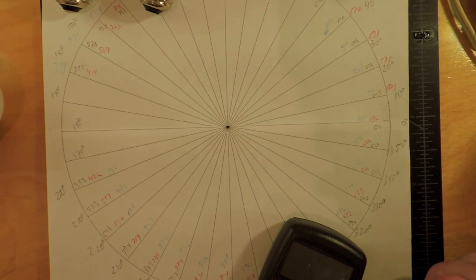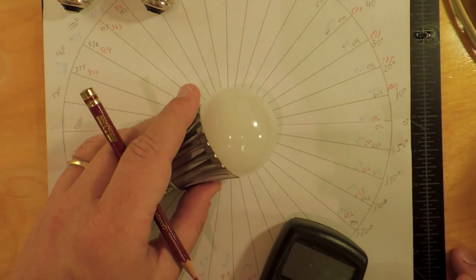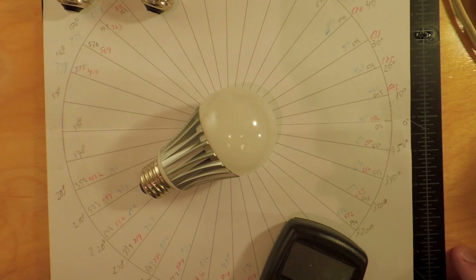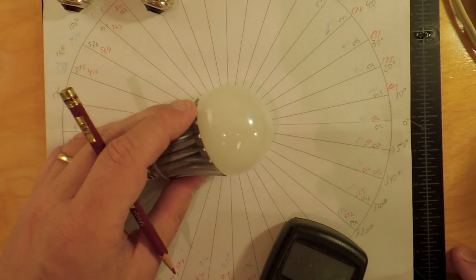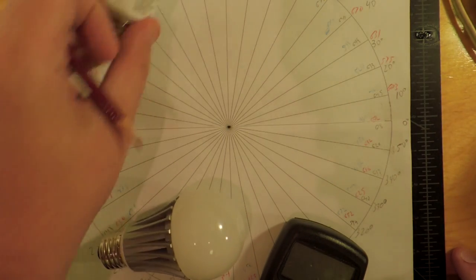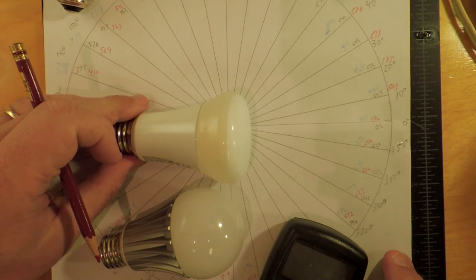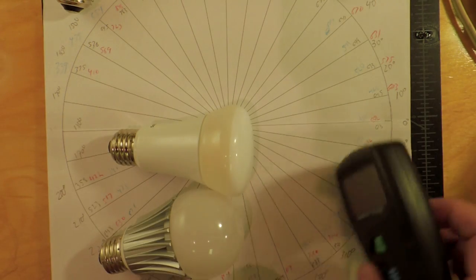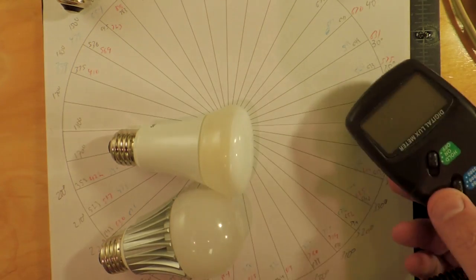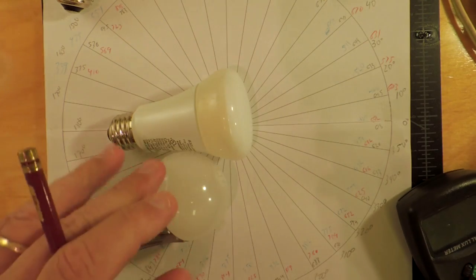Light dispersal patterns. One of the classic problems of LED bulb design is you have to get these really intense point sources and convert them into a reasonable light pattern. Polar graph here, obviously. The bulb is placed in the center here and then with a light meter right around at various angles here to get the light intensity.